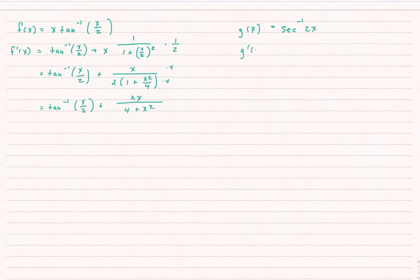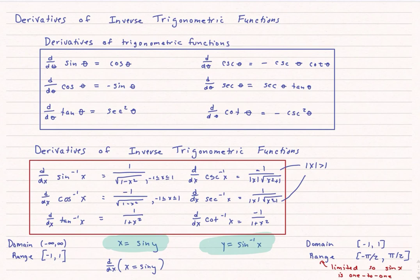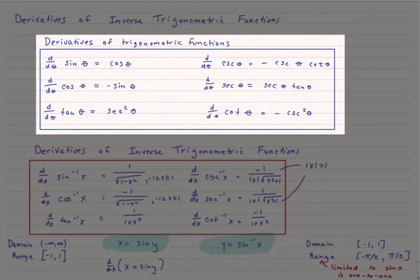To find g prime of x, the derivative of inverse secant of x uses the formula 1 over the absolute value of the argument times the square root of the argument squared minus 1. Here the argument is 2x, so I get 1 over the absolute value of 2x times the square root of (2x) squared minus 1, then I multiply by the chain rule factor of 2. This simplifies to 1 over the absolute value of x times the square root of 4x squared minus 1. These are the derivatives you need to commit to memory — the derivatives of the trigonometric functions as well as the derivatives of the inverse trigonometric functions.